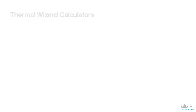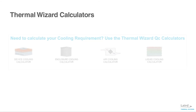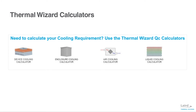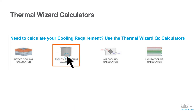If you do not know the cooling requirement, or QC, for your application, the Thermal Wizard provides four calculators — device cooling, enclosure cooling, air cooling, or liquid cooling — each with pre-programmed examples to help you define the QC value and quickly get your design underway. This product training module will focus on the enclosure cooling calculator.